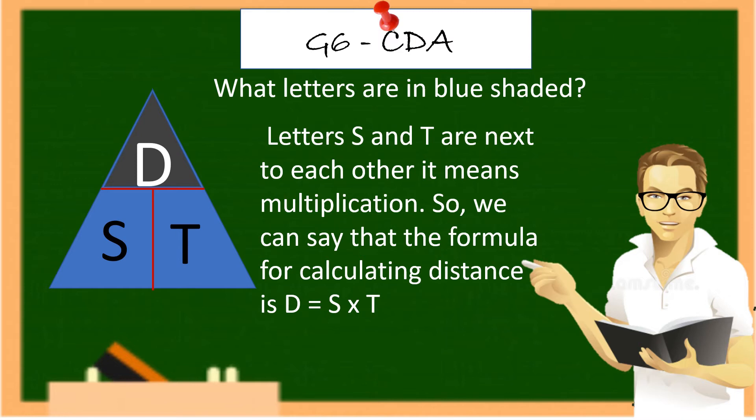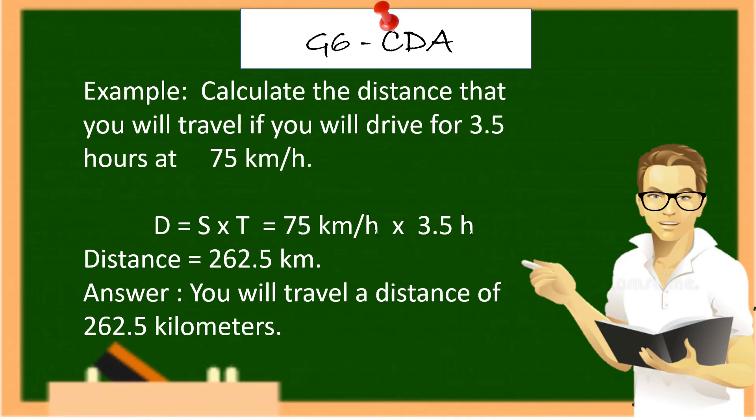So we can say that the formula for calculating distance is D equals S times T. Example, calculate the distance that you will travel if you will drive for 3.5 hours at 75 kilometers per hour. Distance equals speed times time equals 75 kilometers per hour times 3.5 hours. Distance equals 262.5 kilometers. The answer? You will travel a distance of 262.5 kilometers.